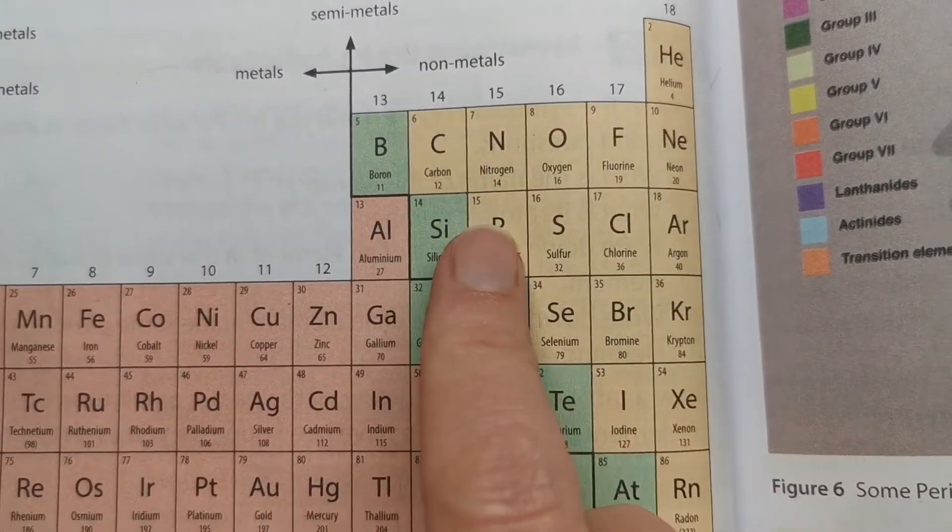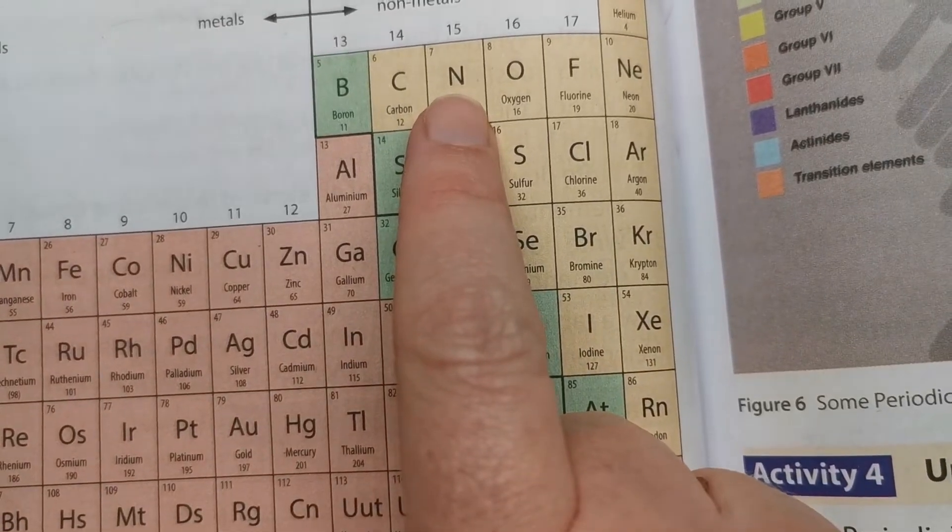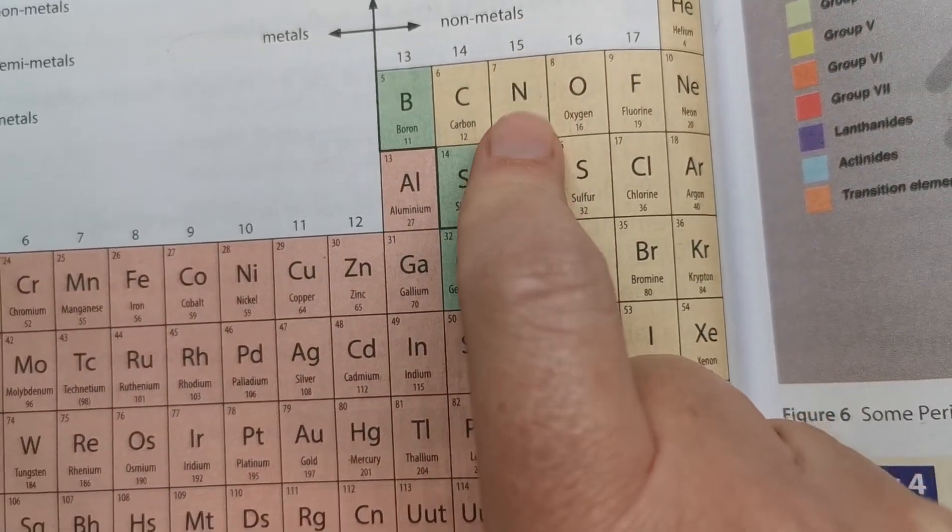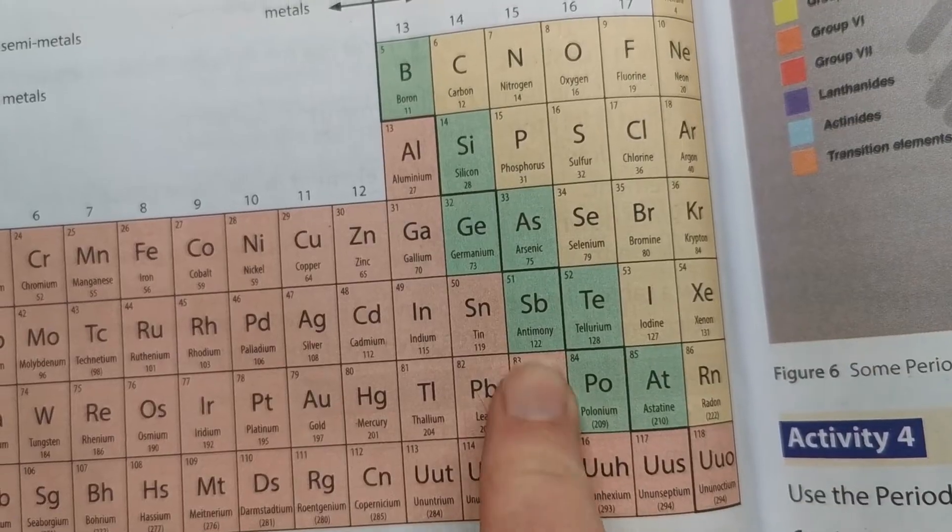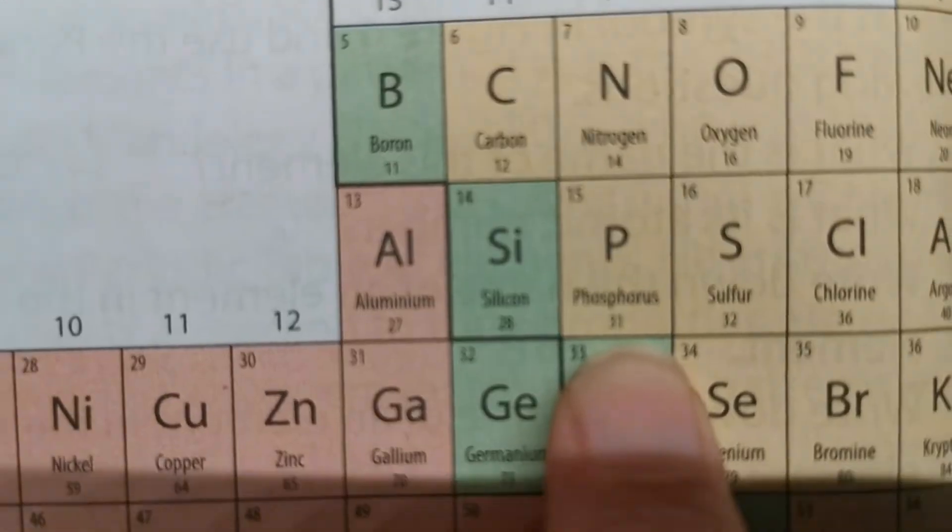But if I ask you, what other elements are in the same group as nitrogen? So what looks like it's the same color as nitrogen? Can you see that it is phosphorus?